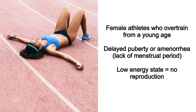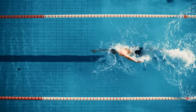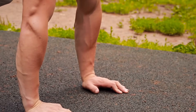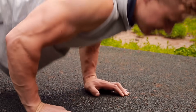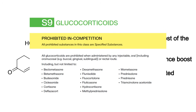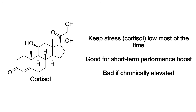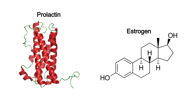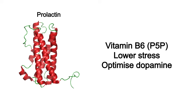Don't overtrain — strength train two to four times a week and do some cardio at least a few days a week. Keeping stress low is important because chronically elevated cortisol messes up pretty much every system in the body, including GnRH. Many men have high prolactin and high estrogen, which both interfere with GnRH. You can lower prolactin with vitamin B6 — either through your diet or supplementation with P5P — and by lowering stress and optimizing dopamine.